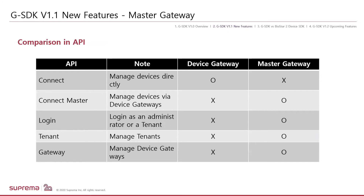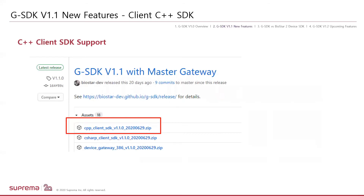This is the table of comparison of API usage between the master gateway and device gateway. The Connect API communicates directly with the device, so only the device gateway can use it. On the other hand, Connect Master, Login, Tenant, and Gateway are APIs dedicated to the master gateway that manage device gateways. And finally, we now start to support the C++ client SDK and sample code as well, which you can find on the GitHub page.